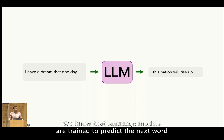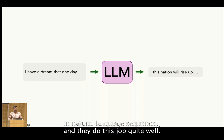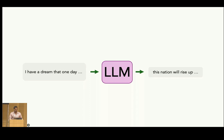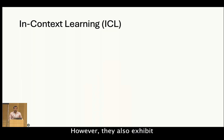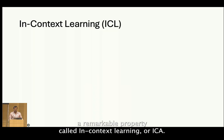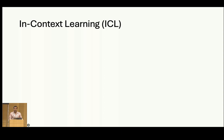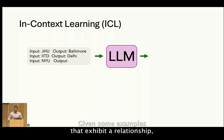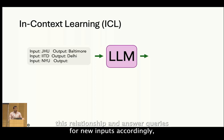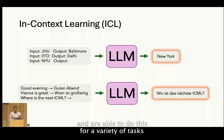We know that language models are trained to predict the next word in natural language sequences and they do this job quite well. However, they also exhibit a remarkable property called in-context learning, or ICL. Given some examples that exhibit a relationship, a language model can understand this relationship and answer queries for new inputs accordingly. LLMs are able to do this for a variety of tasks like translation, sentiment prediction, etc.